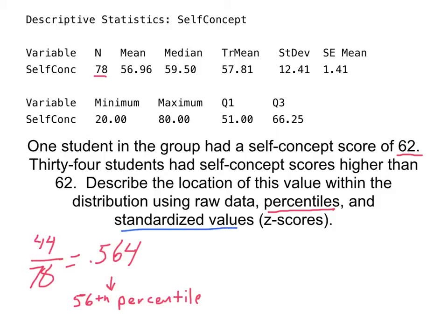Now, in asking for standardized scores, that's a z-score. And remember, a z-score is calculated as raw score minus the mean over standard deviation. So in this case, our raw score was 62 minus 56.96, all over 12.41. And that gives us a z-score of about 0.406.